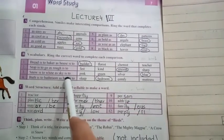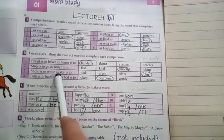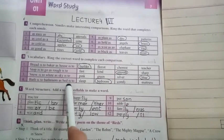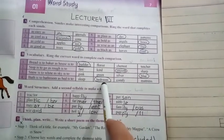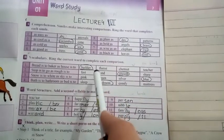Snow is to white as sky is to. Now this is the comparison for colors. Snow is of white color, so sky is of blue color. Bath is to bathroom as bed is to: sleep, bedroom, comfy, mattress. Bedroom. So this is how you will do your exercise A and B on your book with a pencil.